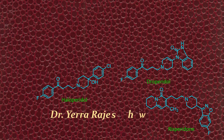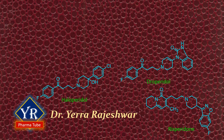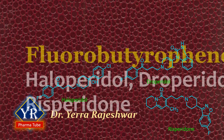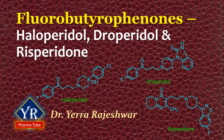Hi guys, this is Dr. Rajeshwar from YR PharmaTube. In the previous video, we learned the ring analogues of phenothiazines. If you did not watch the video, hit the i button on the top right of this video to watch it. To watch the other topics of medicinal chemistry, click on the links given right below this video. In this lesson, we shall discuss the fluorobutyrophenones such as haloperidol, droperidol, and risperidone.